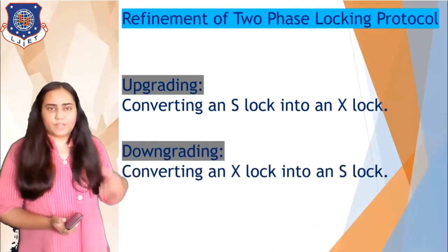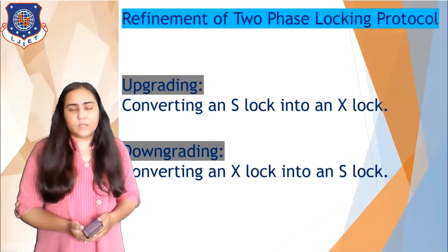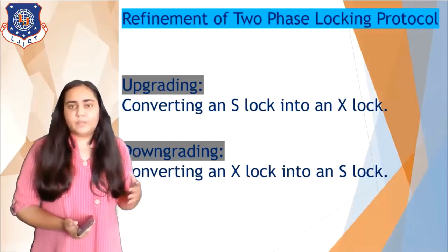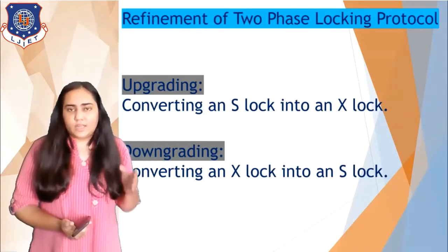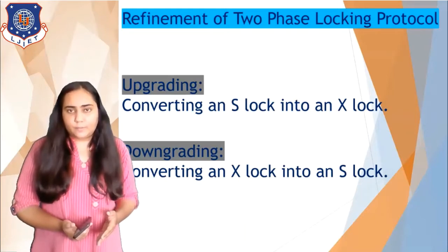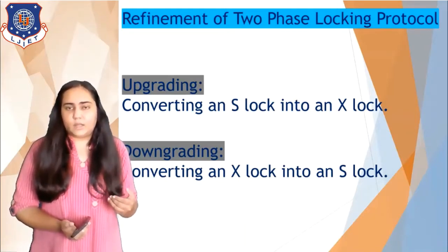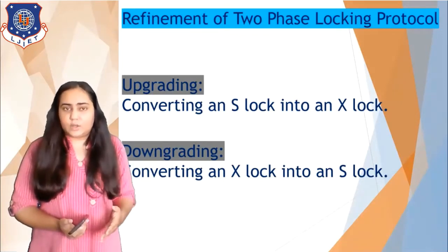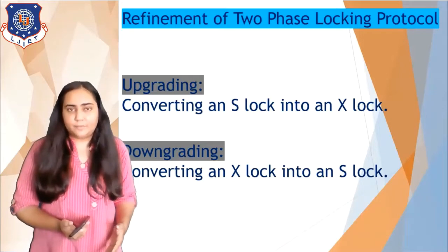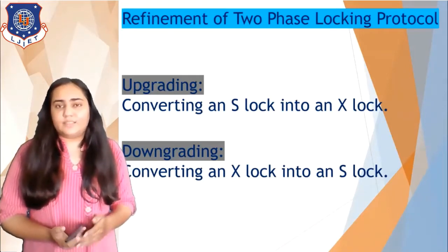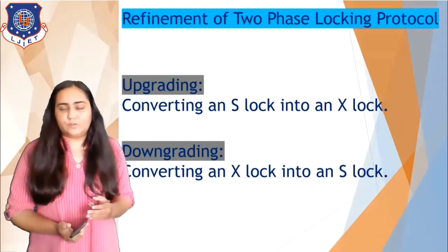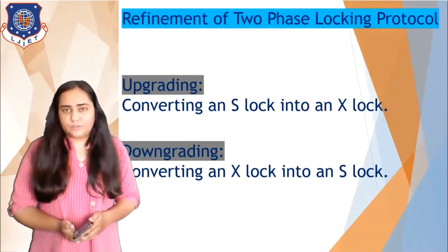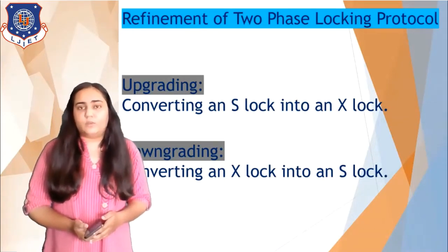The next phase that can be allowed is known as the downgrading phase, where once the transaction has finished writing a data item, it can release the exclusive lock and change it to a shared lock. So it still holds a lock but has not unlocked — it just changed the lock from exclusive to shared. This is known as downgrading, and it can be done only in the shrinking phase of the two-phase locking protocol. That's how you can have all types of variants to make the two-phase locking protocol stricter and more reliable.